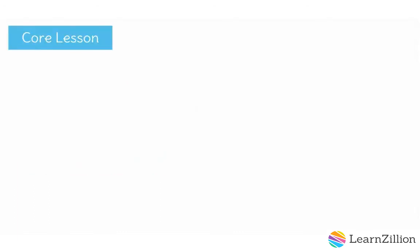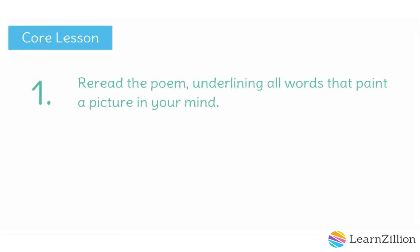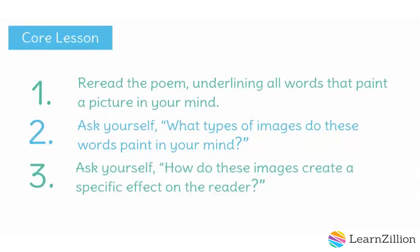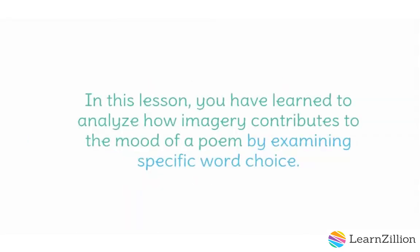So let's review the steps we took to analyze how imagery contributes to the mood of the poem. Step one: reread the poem, underlining all words that paint a picture in your mind. Step two: ask yourself, what types of images do these words paint in your mind? Step three: ask yourself, how do these images create a specific effect on the reader? In this lesson, you have learned to analyze how imagery contributes to the mood of a poem by examining specific word choice.